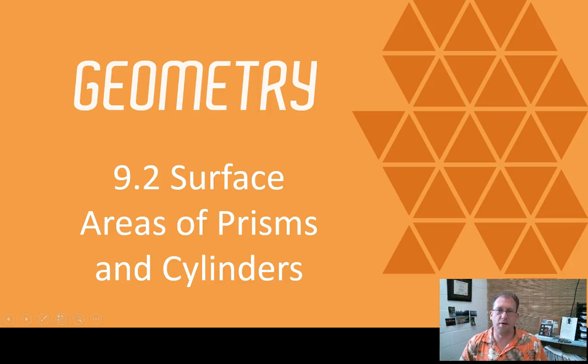Hey, Flip Geometry, how you doing? We're now at Chapter 9, Section 2, and we're going to start looking at surface areas of solids. The first ones up are prisms and cylinders. Let's take a look at those, and we'll get started right now.